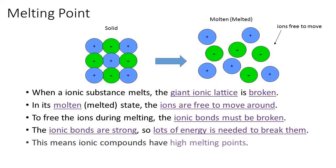Looking at the figure, when an ionic substance melts, the giant ionic lattice — the arrangement of ions — is broken and the ions are separated. In the molten state, the ions are free to move; when they move they carry charge, which is responsible for electric current flow. To free the ions during melting, ionic bonds must be broken, and since they are strong, a lot of energy is needed — this is why ionic compounds have high melting points. So the properties of ionic compounds are now clear, and we will continue in our next class.